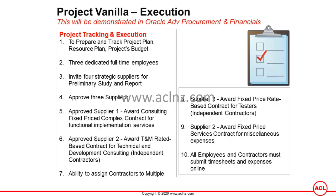They also wanted to assign a fixed price services contract for miscellaneous expenses to supplier number two. The time and material contract is used for billing the buying organization for services provided, but while contractors are on board they will also incur reimbursable expenses such as hotel, travel, taxi, and laundry expenses — and they wanted to assign that to supplier number two as well. Finally, all employees and contractors must be able to submit timesheets and expenses online so that billing, reimbursement, and payments to suppliers can all be tracked.